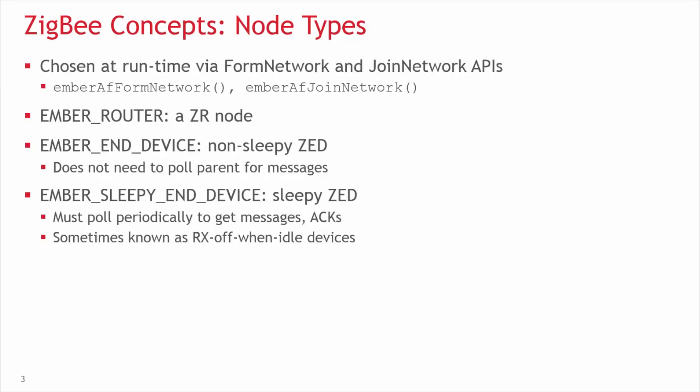Now, tying these back to stack concepts and how one determines the node type. In the Ember ZNet stack, the node type is chosen via the form network and join network API calls. For example, if you have an Ember AF form network call, it will determine whether or not the node forms a network and this node becomes a coordinator.